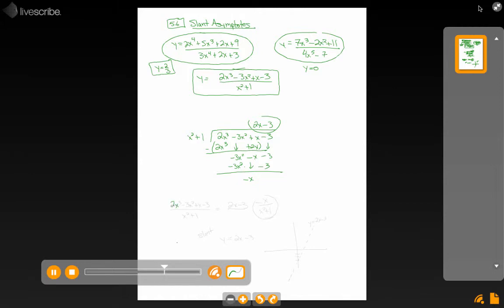So in other words, 2x³ - 3x² + x - 3 divided by x² + 1 equals 2x - 3 and then this remainder term of -x over x² + 1. But as x gets really, really large, this remainder piece of that goes towards 0. And the asymptote that we would have is a slant asymptote at y = 2x - 3.